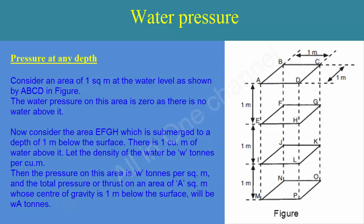There is one cubic meter of water above EFGH. Let the density of the water be W tons per cubic meter; then the pressure on this area is W tons per square meter. The total pressure or thrust on an area of A square meters whose center of gravity is 1 meter below the surface will be W·A tons.